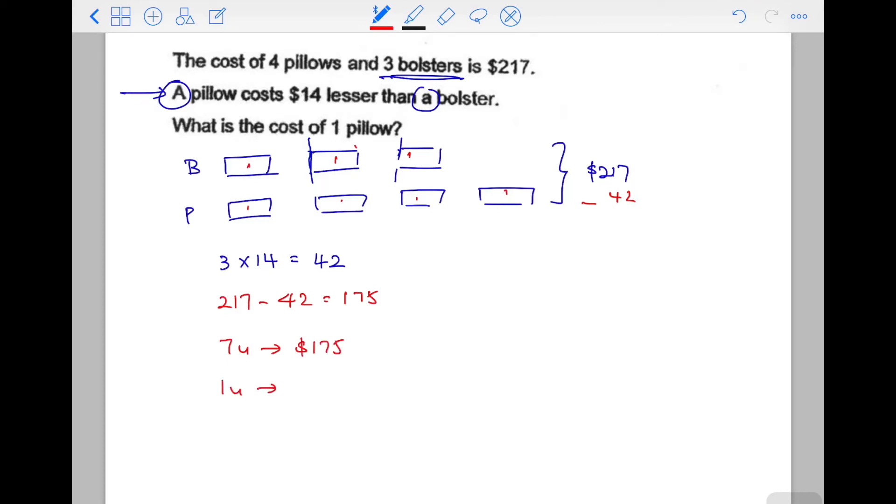We can use the units method to find one unit. One unit equals $25. So now we know the cost of one pillow is $25, and that's the answer. Actually, the question is quite easy.